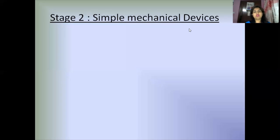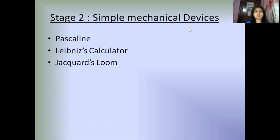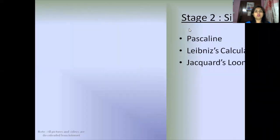In previous class we have learned about the background of three different stages of development of computer and stage one. Now we are going to start stage two: simple mechanical devices. In this stage there are three devices: Pascaline, Leibniz's calculator, and Jacquard's Loom. Let us have a look in detail about Pascaline.